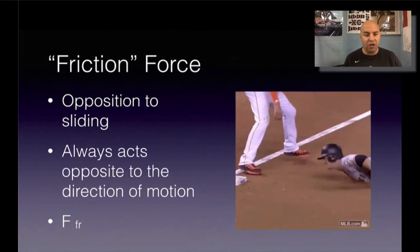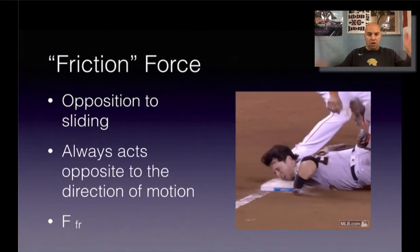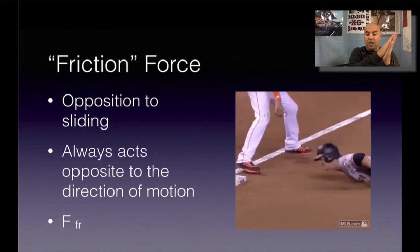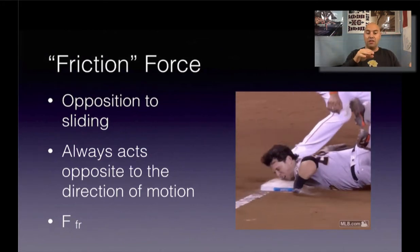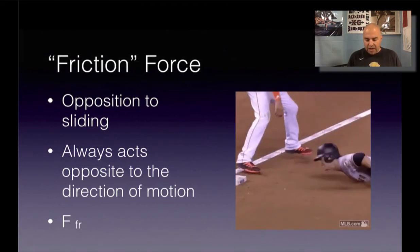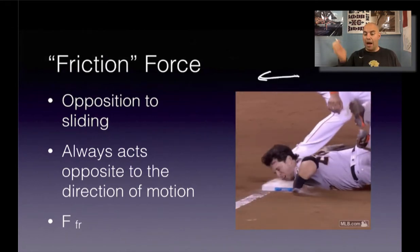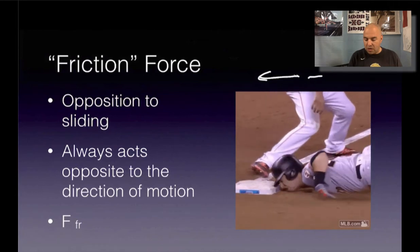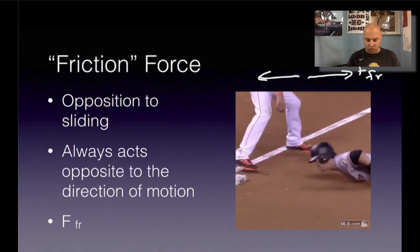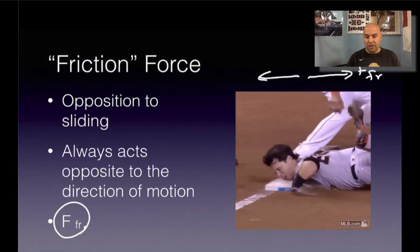The next one is what's called the friction force. The friction force is the force that opposes sliding — it's always acting in the opposite direction to the movement. So for a guy sliding into third base, he's moving one way but the friction force is acting in the opposite direction. The symbol we use for the force of friction is F sub FR.